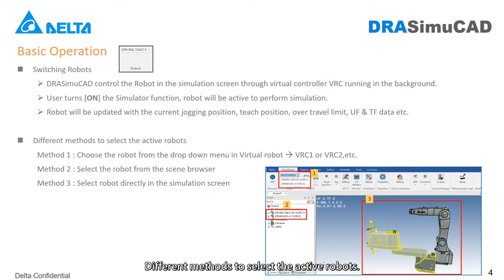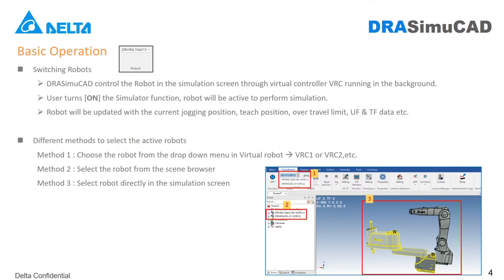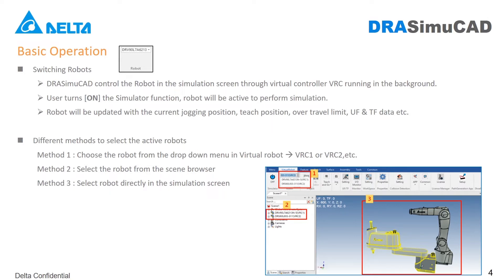Different methods to select the active robots: First, choose the robot from the drop-down menu in Virtual Robot. Second, select the robot from the scene browser. Third, select the robot directly in the simulation screen.